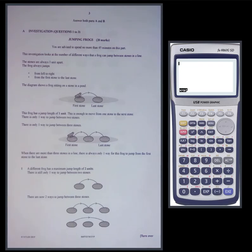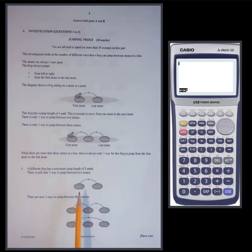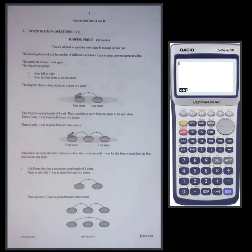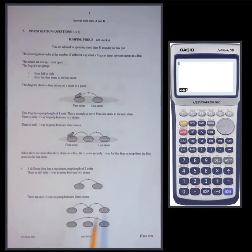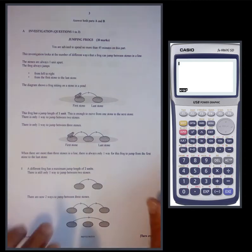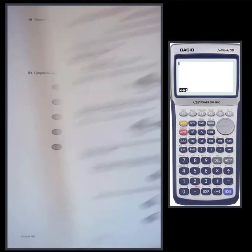A different frog has a maximum jump length of two units. There is still only one way to jump between two stones. Even if you have a maximum jump of two units, you can't use it because you'd end up missing the stone and landing in the water. There are now two ways to jump between three stones — you could either go one-one, or do the whole thing in a two-unit jump, giving you different options and more combinations.